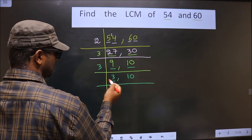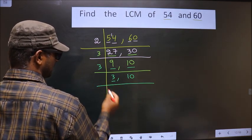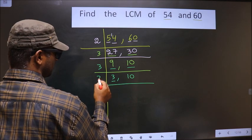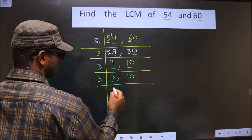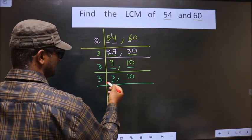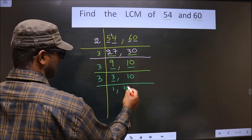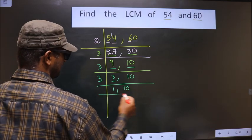Now here we have 3. 3 is a prime number, so we take 3 and 1. 10 is not divisible by 3, so you write 10 as it is.